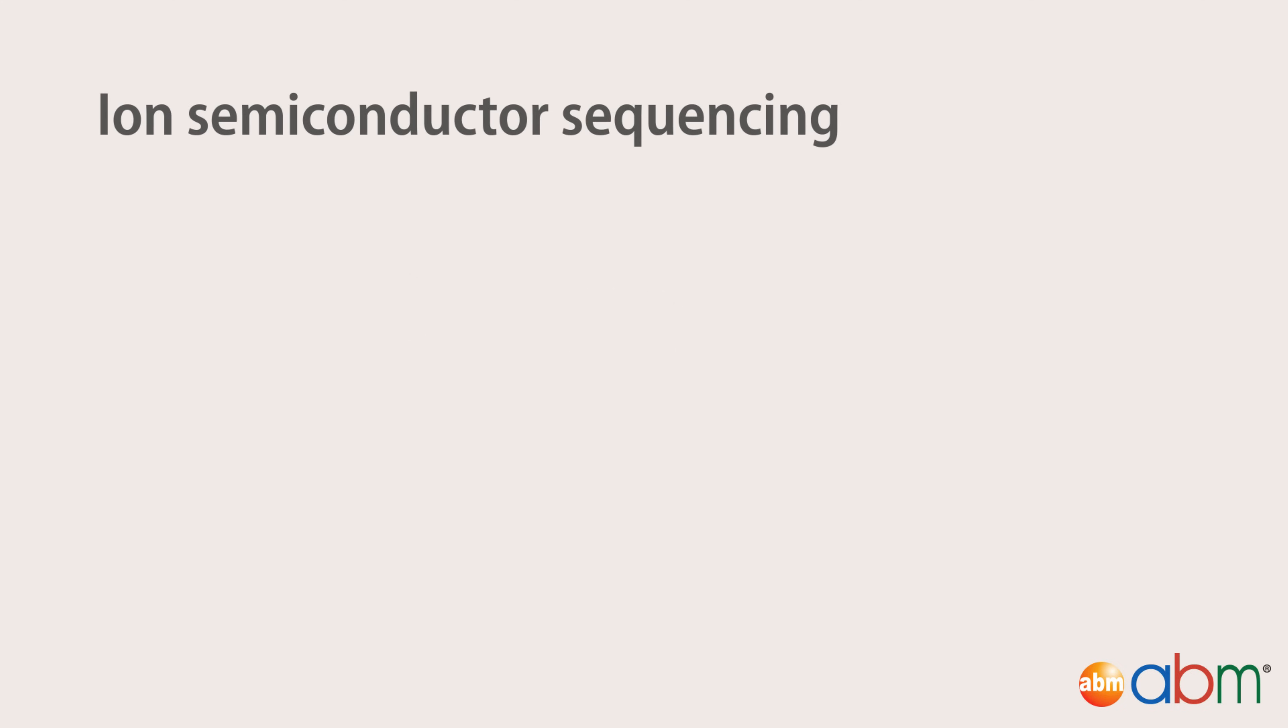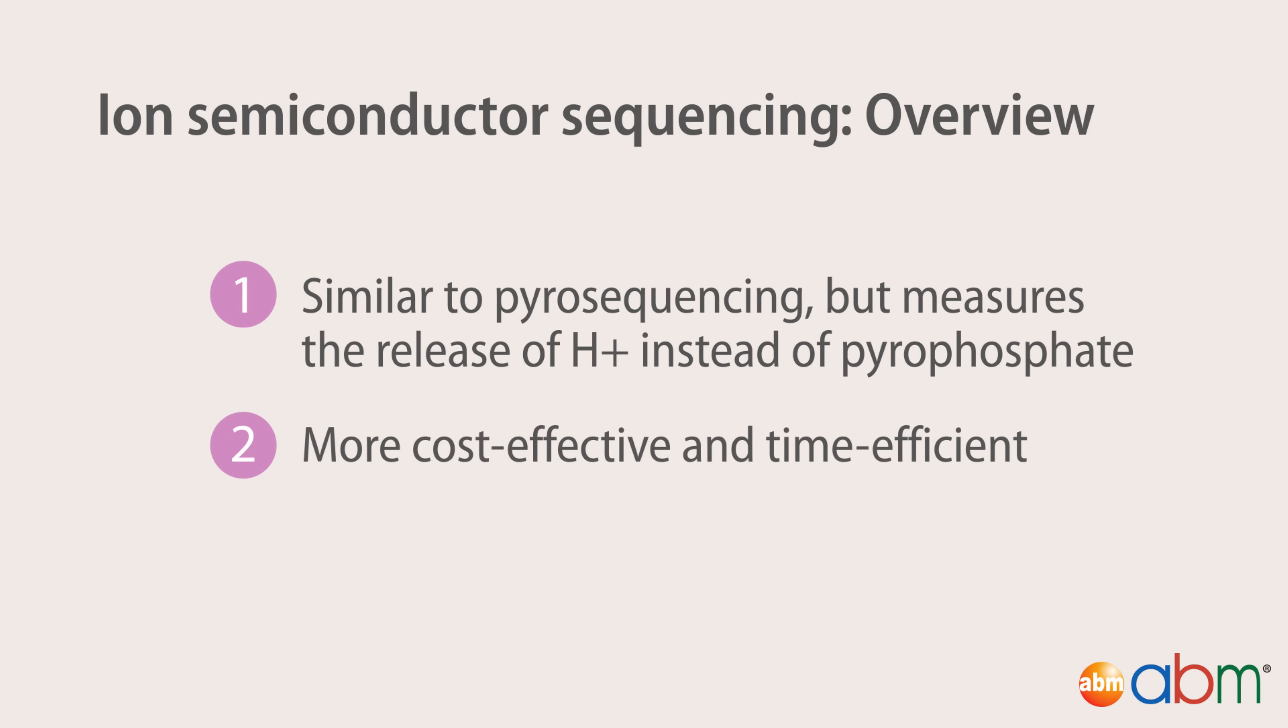Ion semiconductor sequencing utilizes the release of hydrogen ions during the sequencing reaction to detect the sequence of a cluster. Each cluster is located directly above a semiconductor transistor, which is capable of detecting changes in the pH of the solution. During nucleotide incorporation, a single hydrogen ion is released into the solution, and it is detected by the semiconductor. The sequencing reaction itself proceeds similarly to pyrosequencing, but at a fraction of the cost. Please view our knowledge base for further details on ion semiconductor sequencing and the sequencing by ligation techniques.